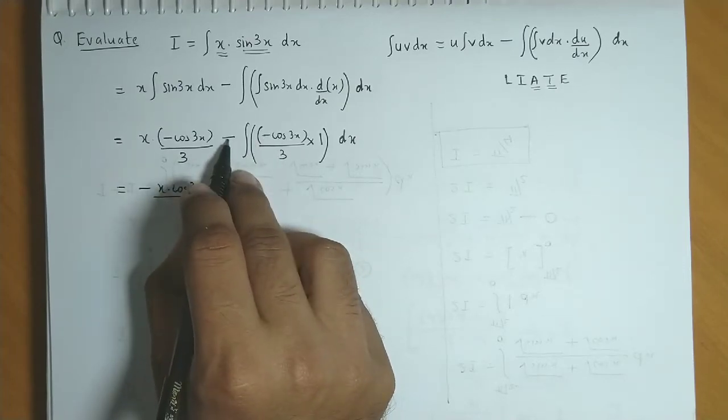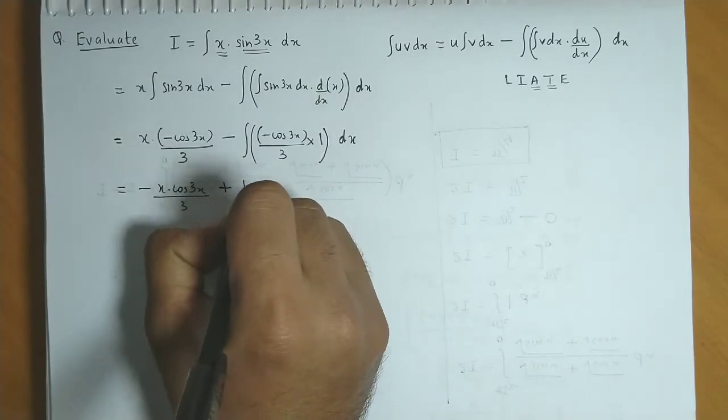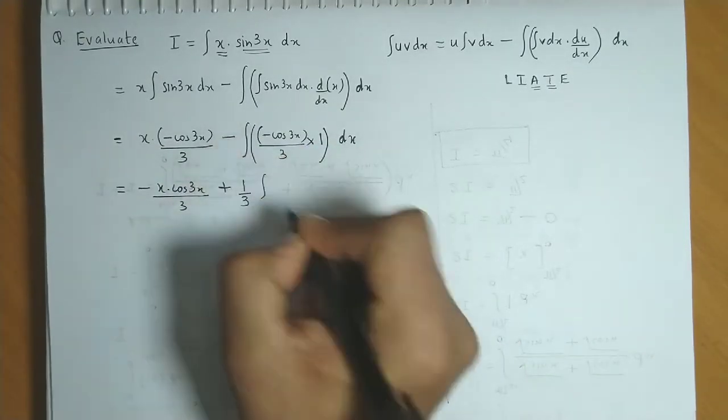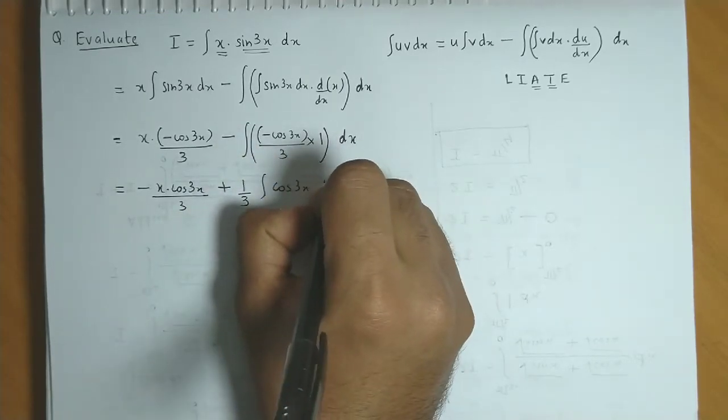and this negative sign also goes out. So it becomes plus one by three, integration of cos 3x dx.